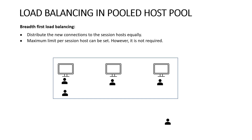Similarly, the next user goes to the next session host, and you can see two session hosts have equal load. The user after that goes to the third session host. So that's how breadth-first load balancing works — it distributes the load equally among the session hosts.